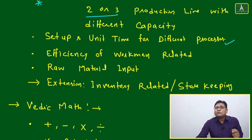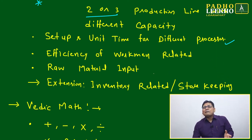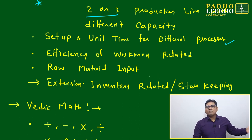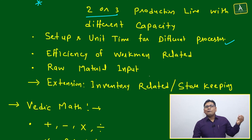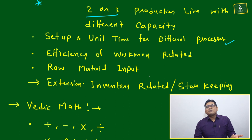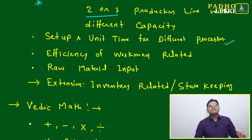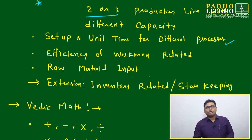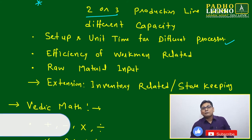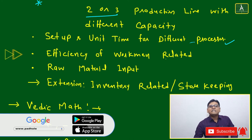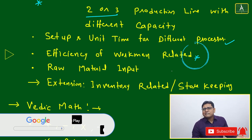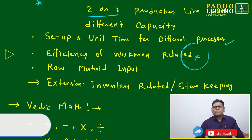Another extension: introduce setup time and unit time for different processes. So far the table only covers output-side data; we haven't considered input-side factors like number of workers, type of process adopted, machine setup time, or machine unit time. Extending to the input side makes the question even more interesting.